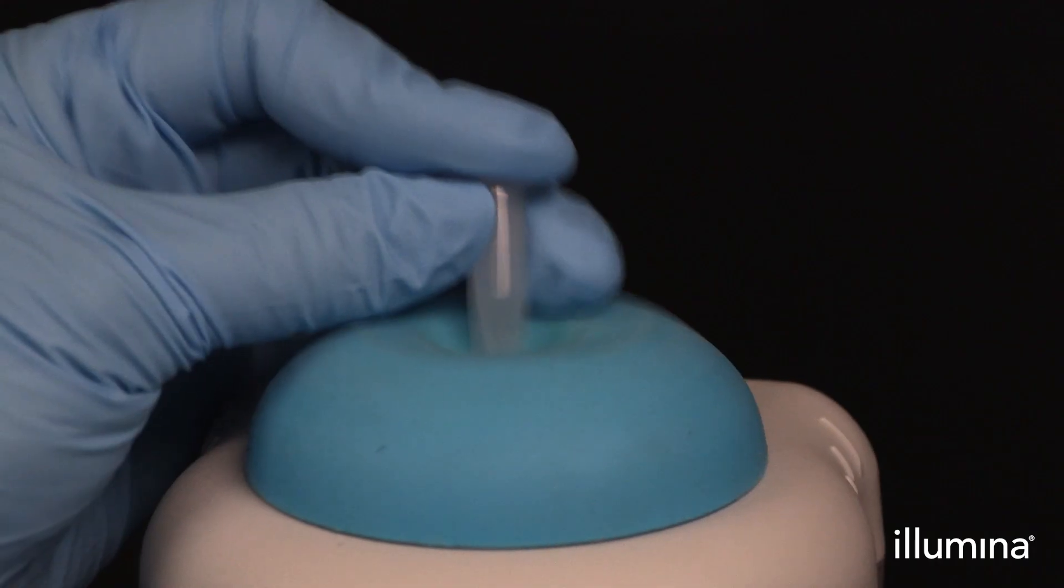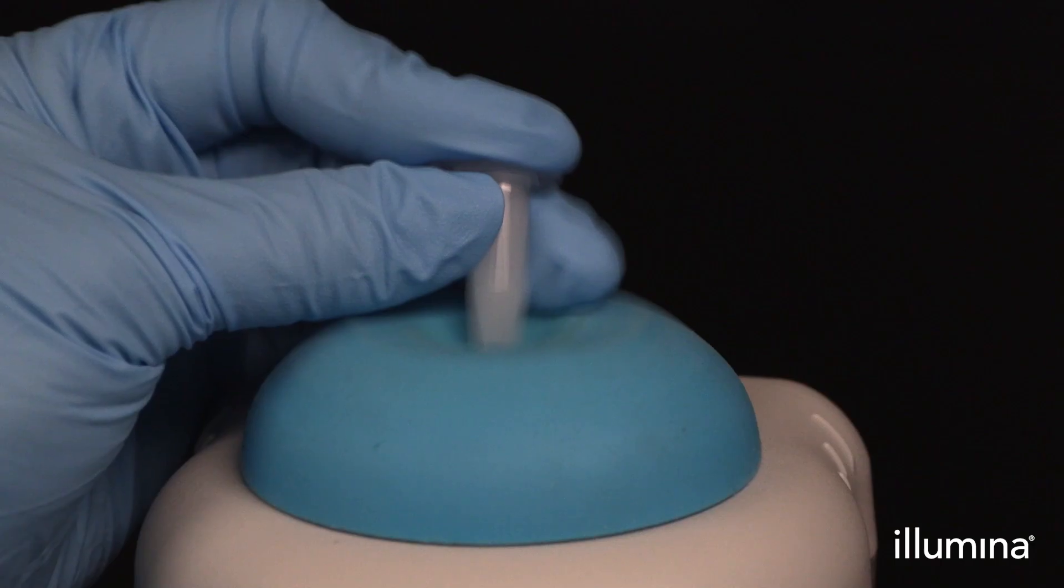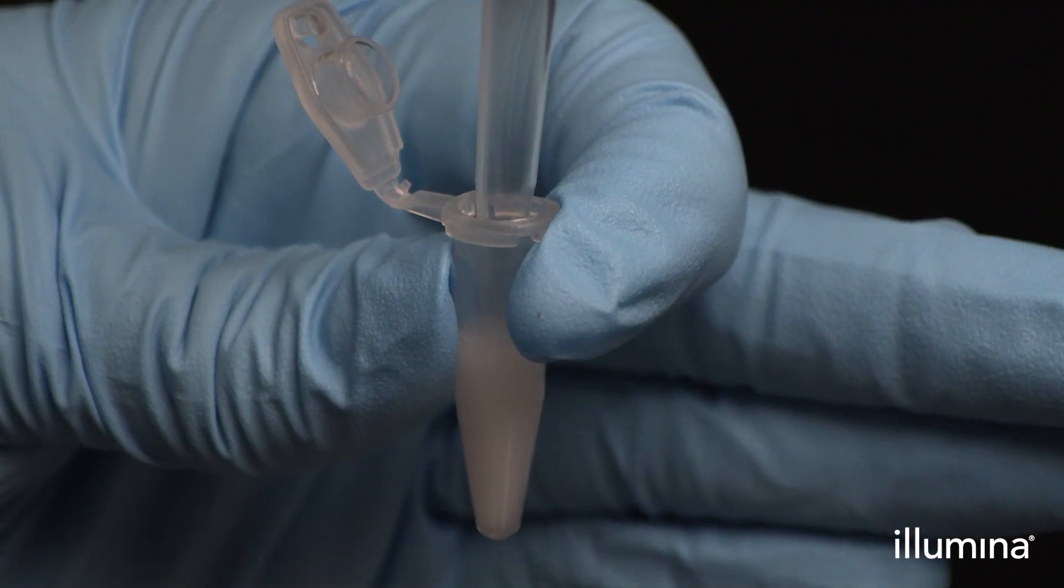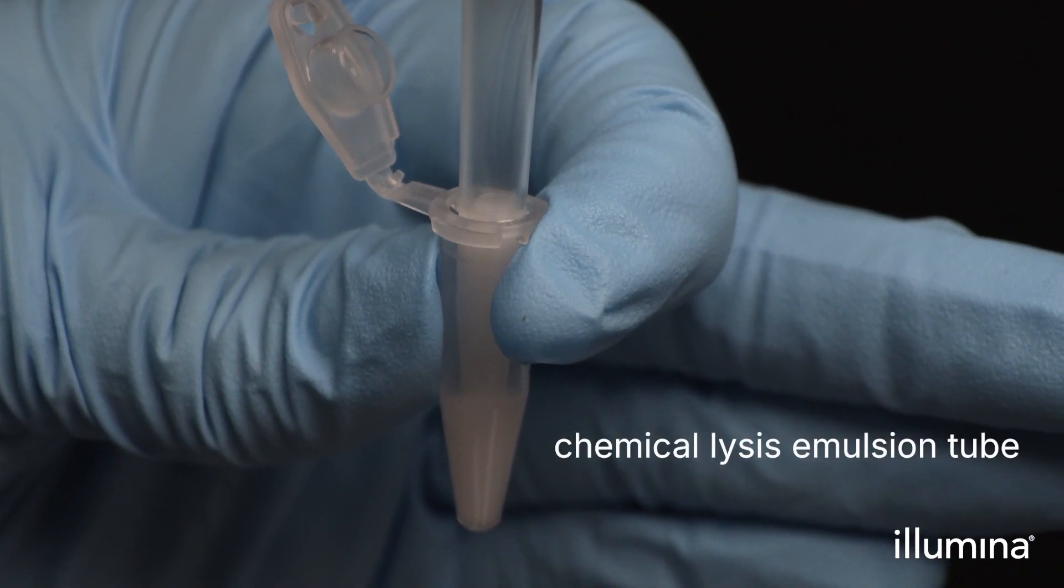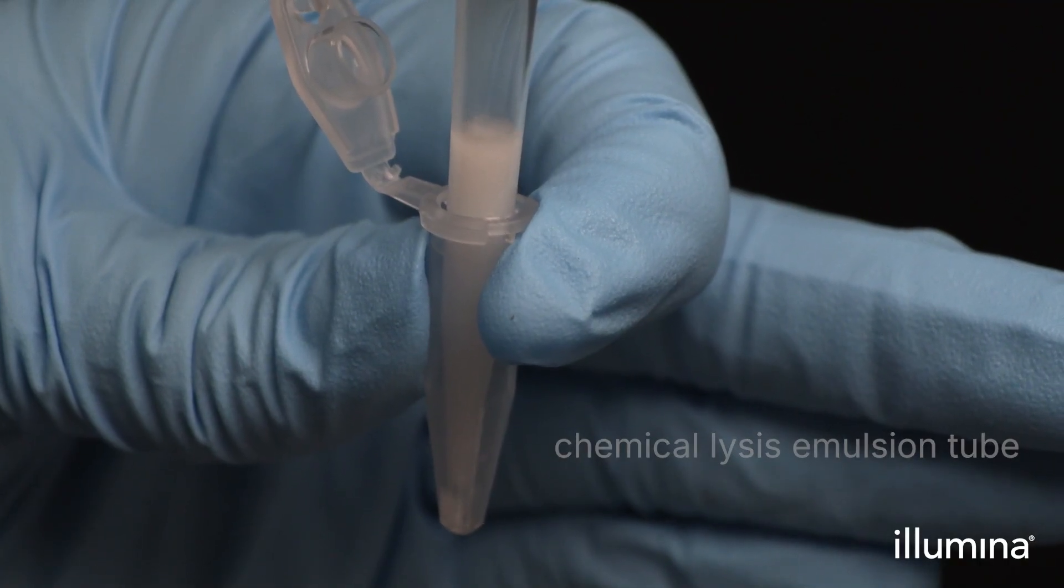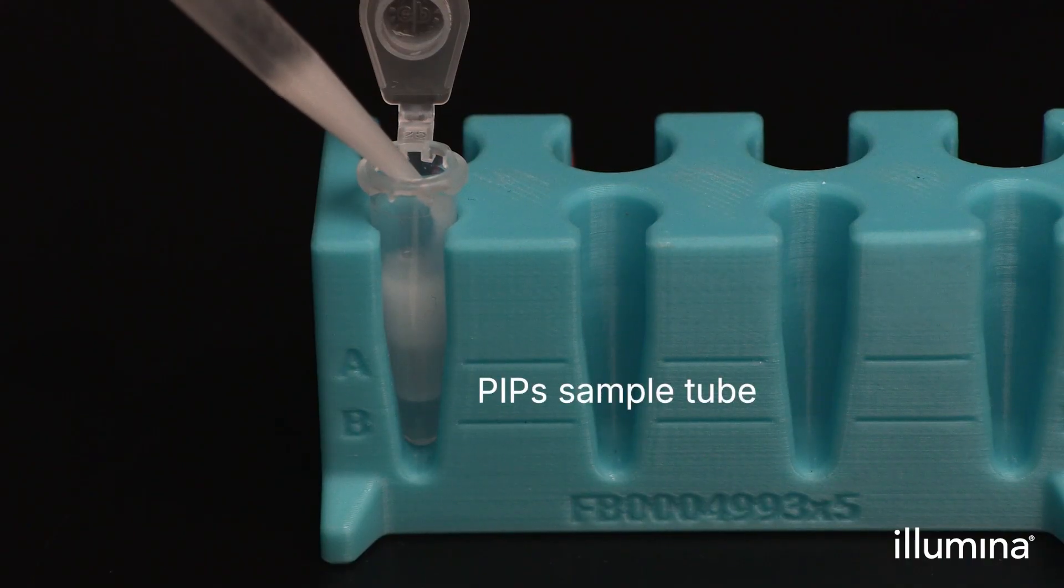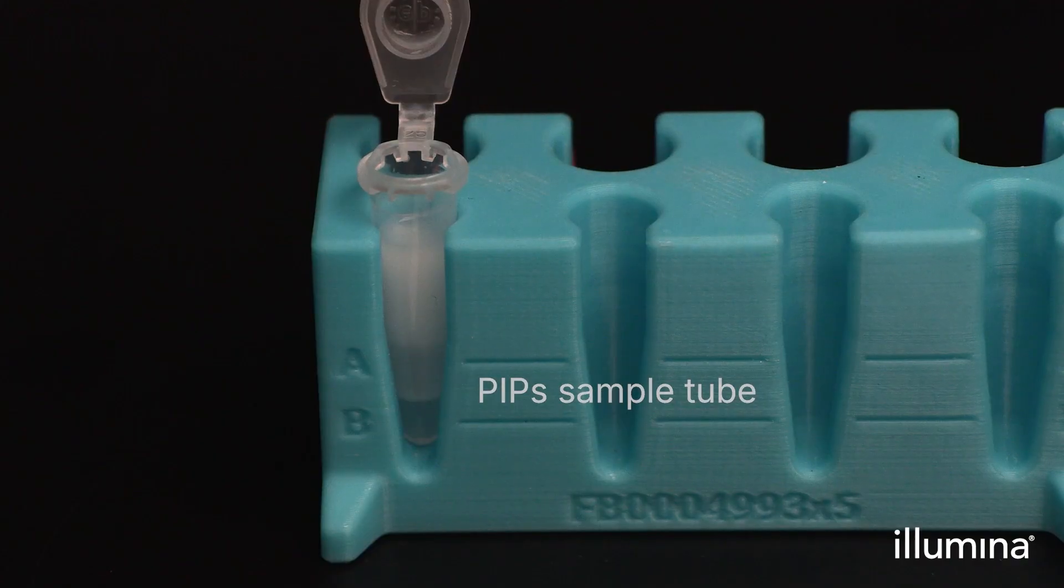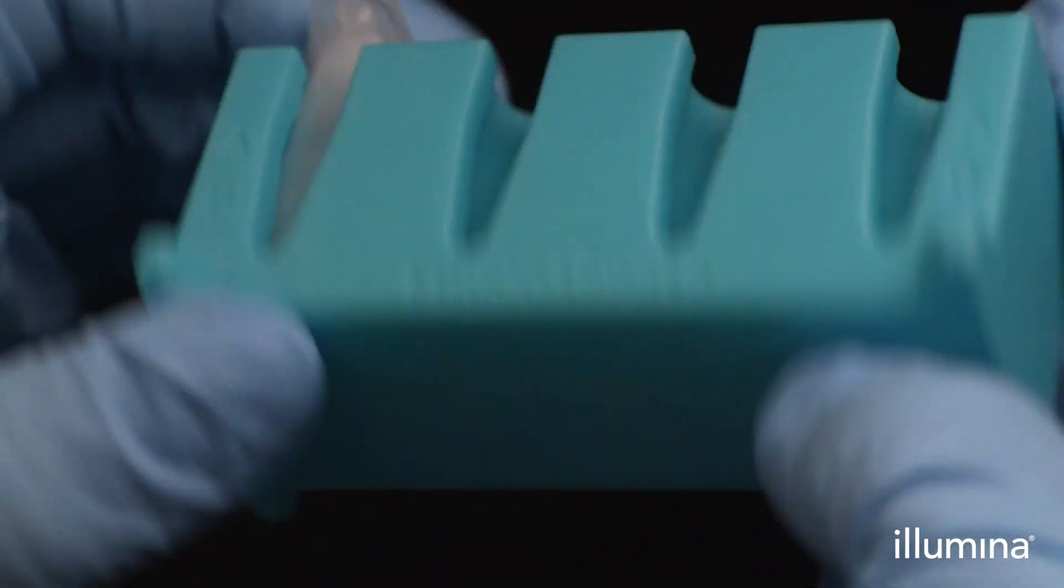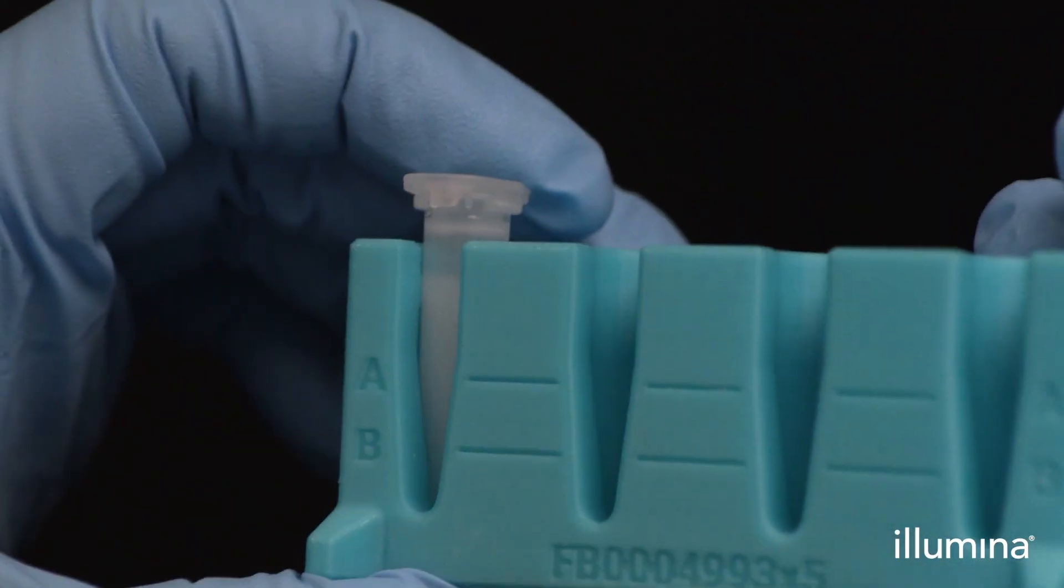Next, vortex the tube for 10 seconds at max speed on a standard benchtop vortexer to generate the chemical lysis emulsion. Immediately transfer the entire chemical lysis emulsion into the pip tube before closing the tube and inverting 10 times. Then proceed with the next sample by adding partitioning reagent and repeating these same steps.